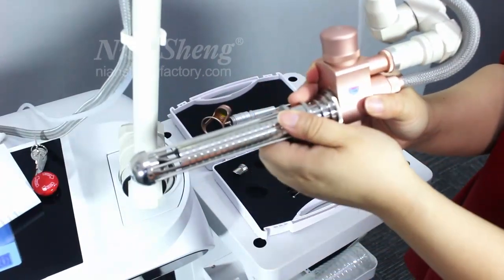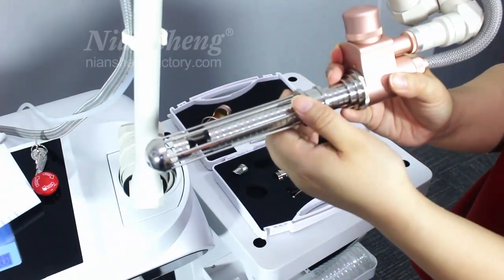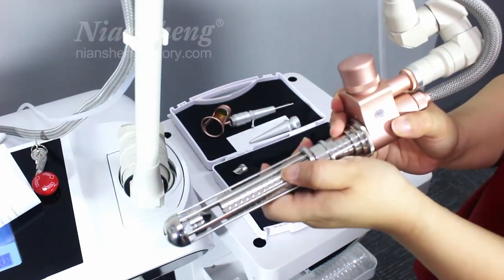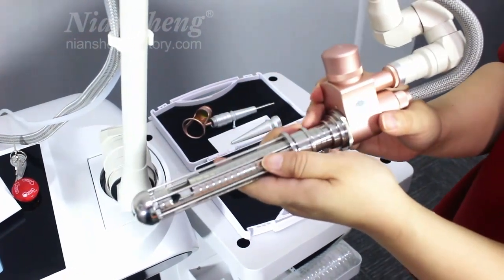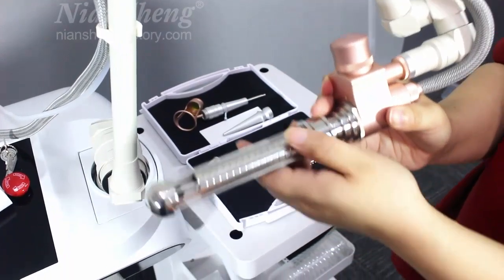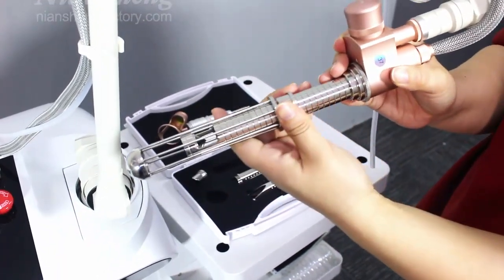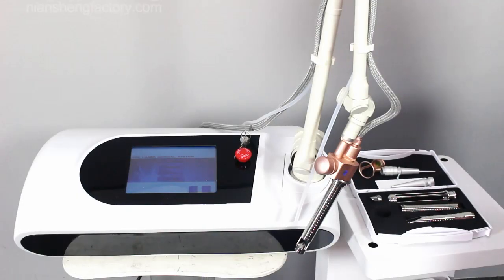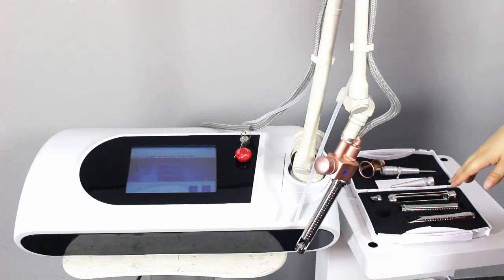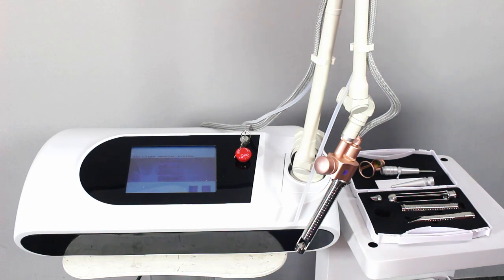Because this part you need to use for vaginal treatment, we can make the video for you. If you want to get more information about vaginal treatment, you can contact us. This is how to operate the CO2 laser machine. If you have any questions and want to get more information, please contact us to get more videos. Thank you.